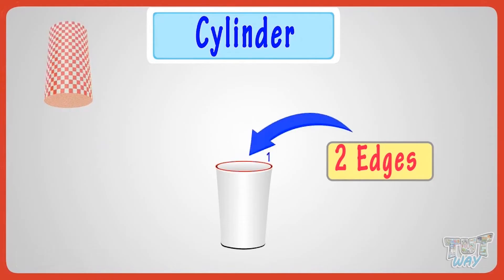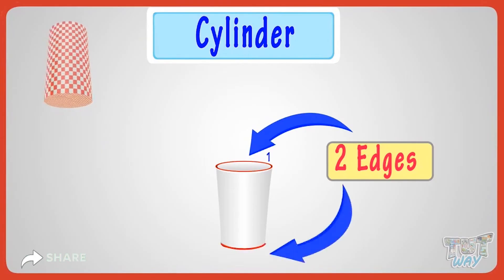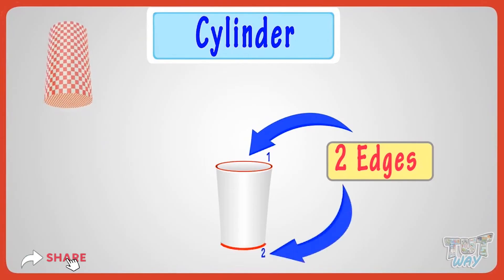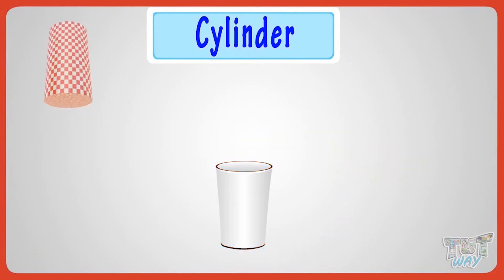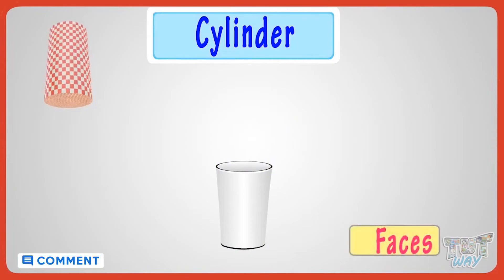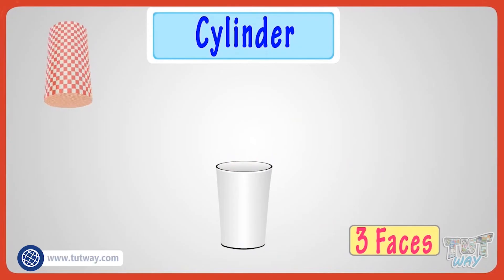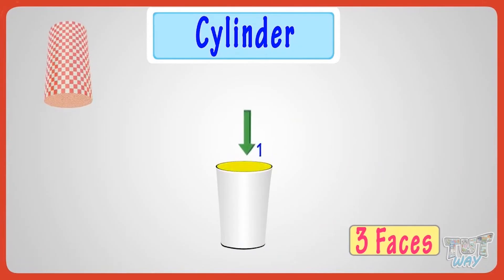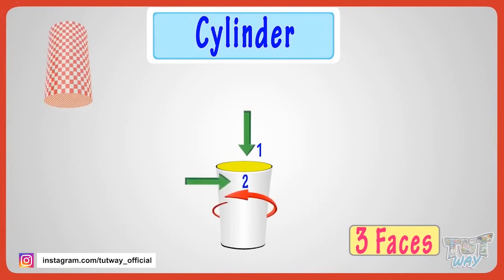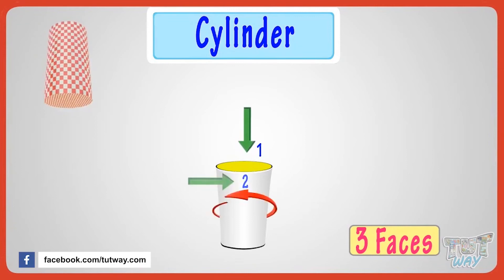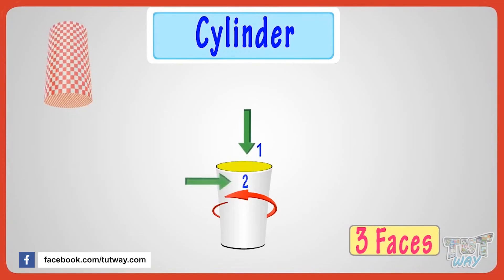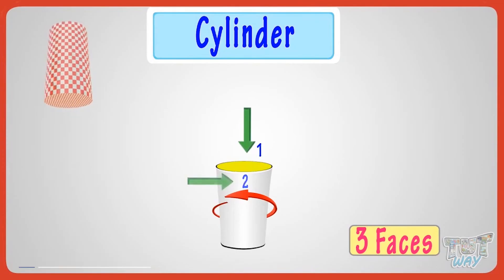The other one is the circle on the bottom. Now let's figure out its faces. It has three faces. One face is round shaped on the top. The second one is the curved surface that wraps around it.